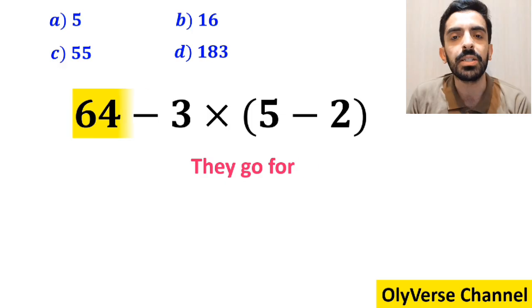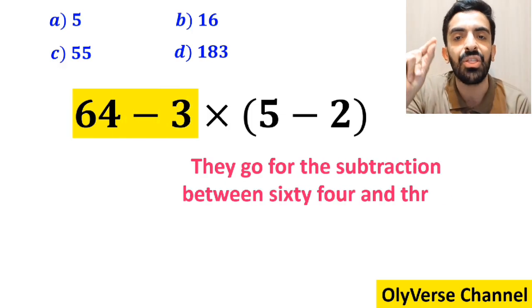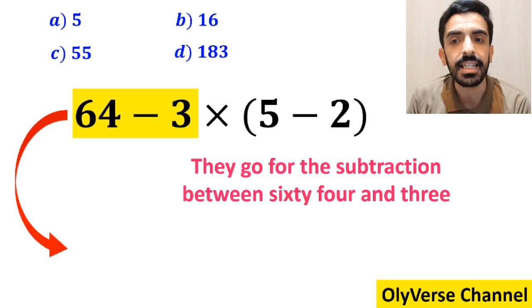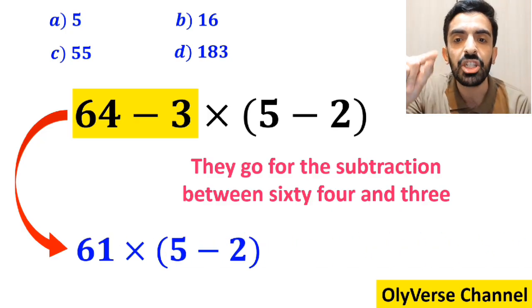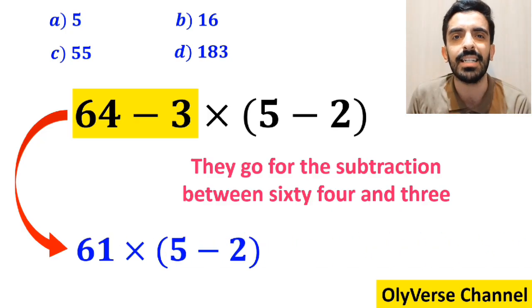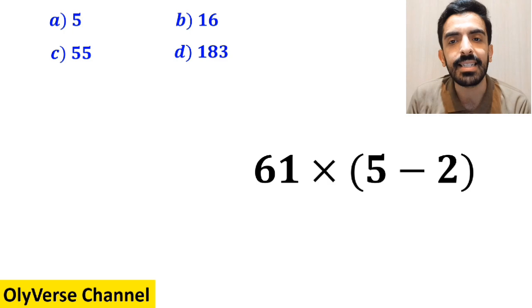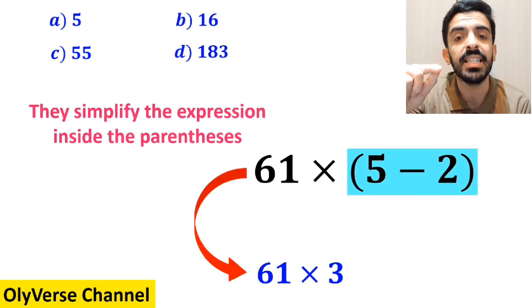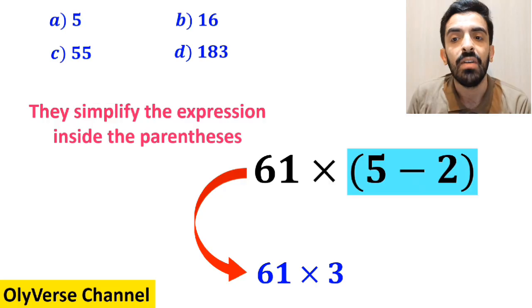And the next step, they go for the subtraction between 64 and 3, which I have highlighted in yellow. And instead of this expression, they write 61 times 5 minus 2 inside the parenthesis. And the final step, they simplify the expression inside the parenthesis and replace it with 61 multiplied by 3, which gives them the answer 183.